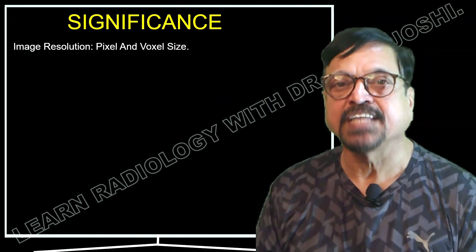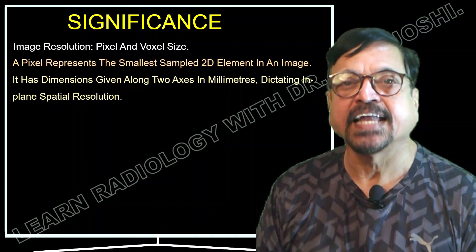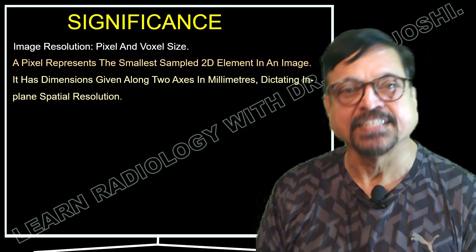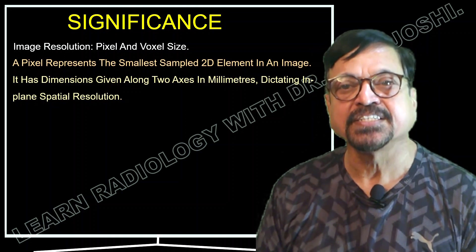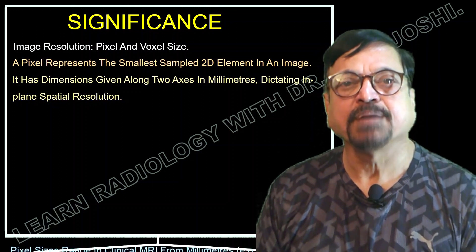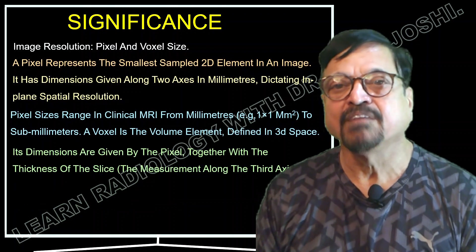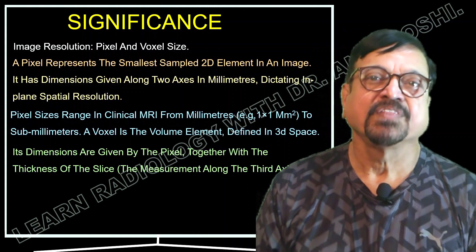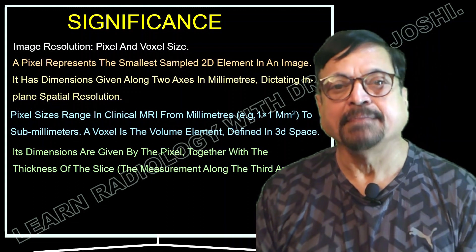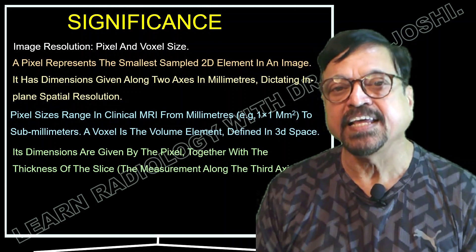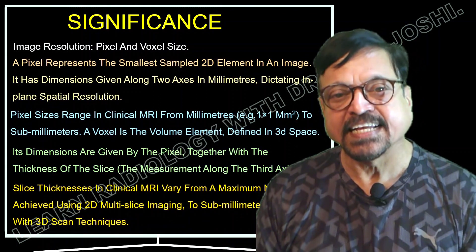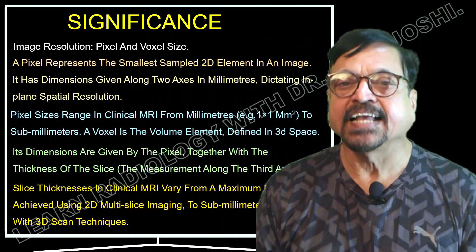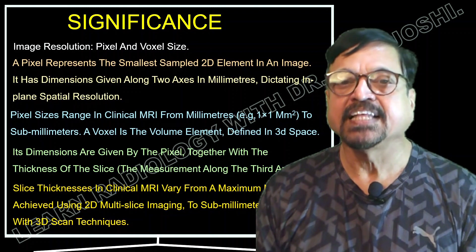Image resolution is directly proportional to pixel and voxel size. A pixel represents the smallest sampled 2D element in the image, with dimensions given along the axis in millimeters, dictating in-plane spatial resolution. Pixel size in clinical MRI ranges from millimeters to sub-millimeters. A voxel is the volume element defined in 3D space. Its dimensions are given by the pixel together with the slice thickness — the measurement along the third axis. Slice thickness in clinical MRI varies from a maximum of around 5 millimeters achieved using 2D multi-slice imaging to sub-millimeters achieved with 3D scanning techniques.